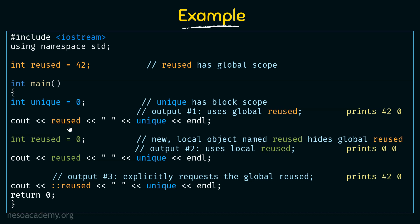Here I print the values of reused and unique using cout. The value of reused will be the global one, which is 42, and unique is 0. So the first output prints 42 and 0 — 42 from the global reused and 0 from the local unique.